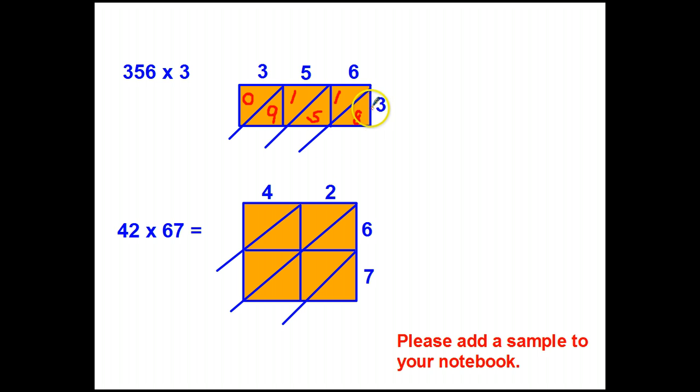Then the second part is to add what falls within these lines. 8 is all by itself. 5 plus 1 is 6. 9 plus 1 is 10, and I will have to carry. 10 has no units and one 10. 1 and nothing is 1. So our answer here is 1,068.